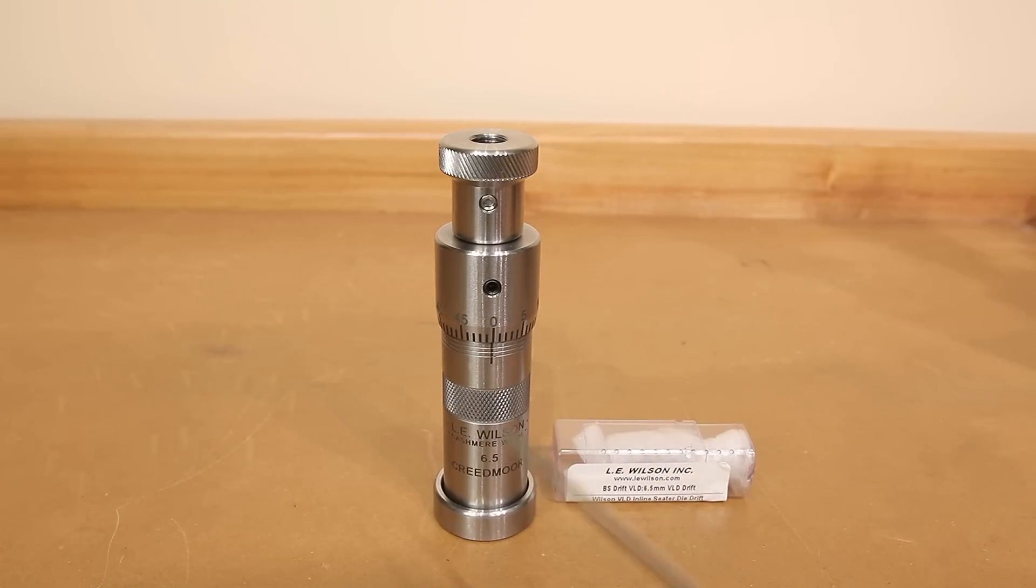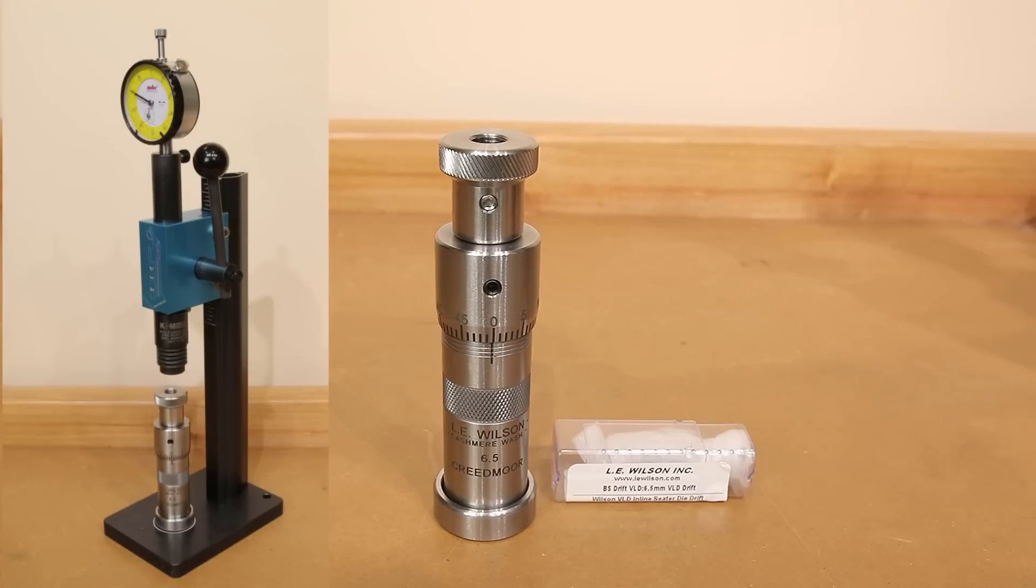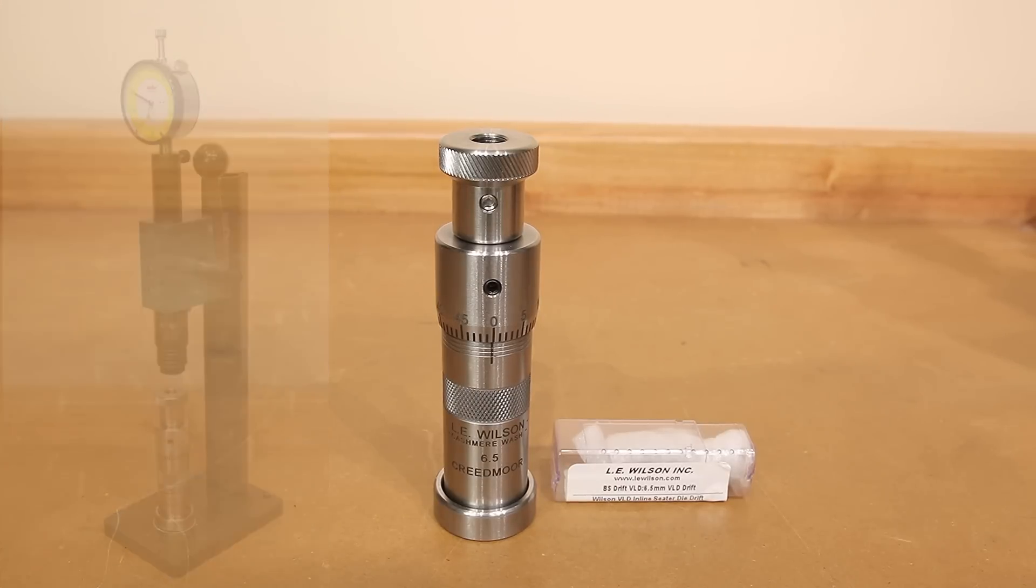Once it's set, turn your set screws in, no reason to over tighten them, and your settings are preserved until you want to change them. Dies like this typically need to be used with an arbor press. Some people may choose to use some type of rubber hammer. But for the sake of this video, we're going to stick with the recommended use of this product. Since we've gone over our die, let's take a look at the press. We're going to show how these things can work together and what they can do for us.